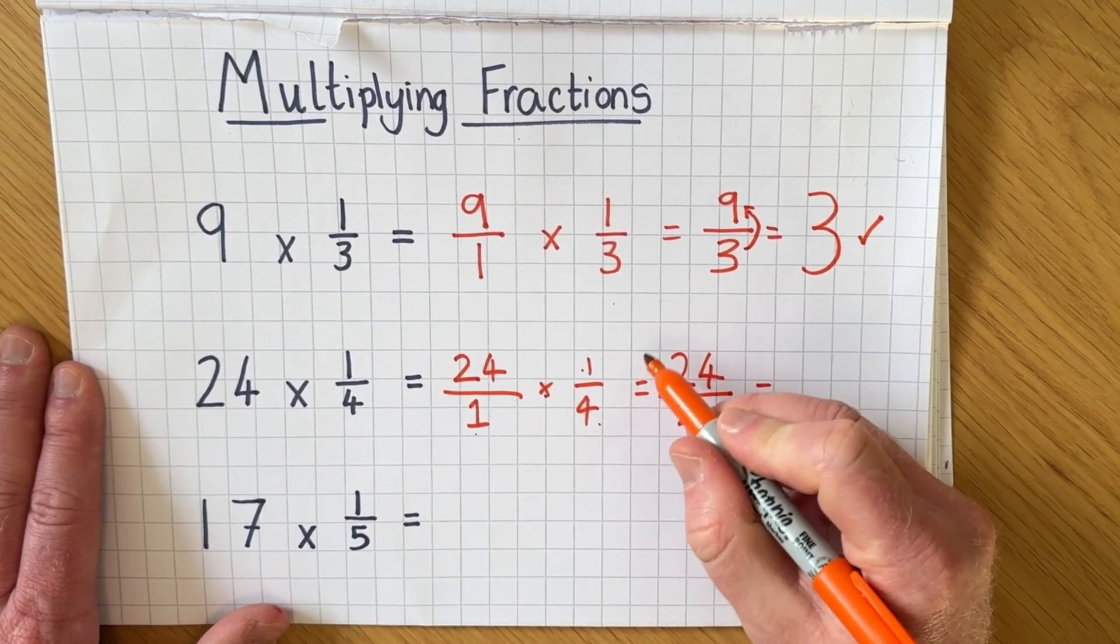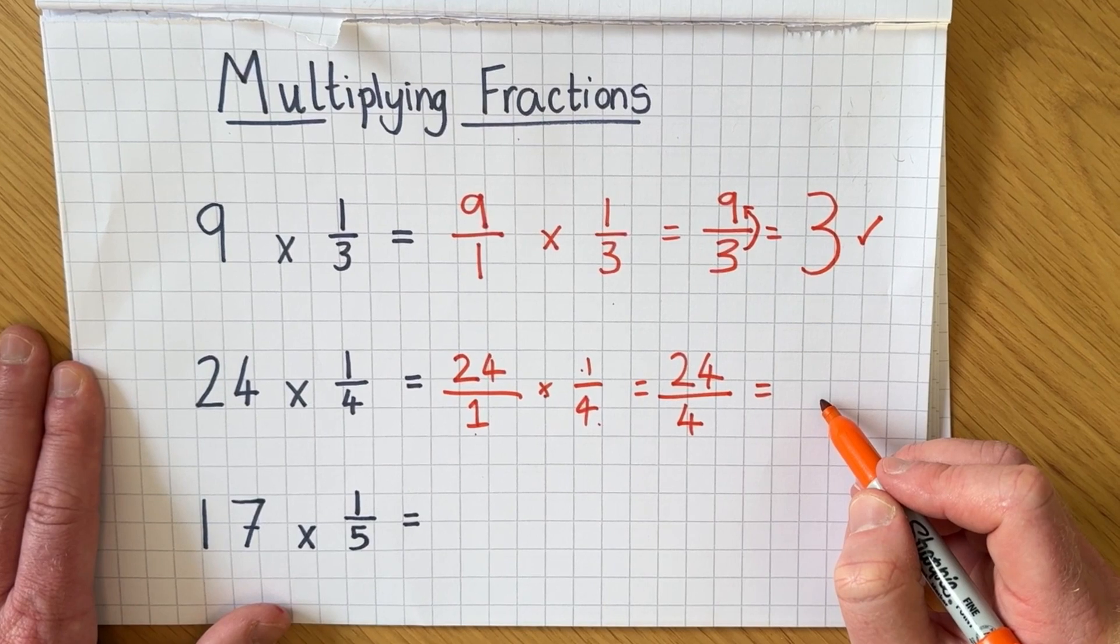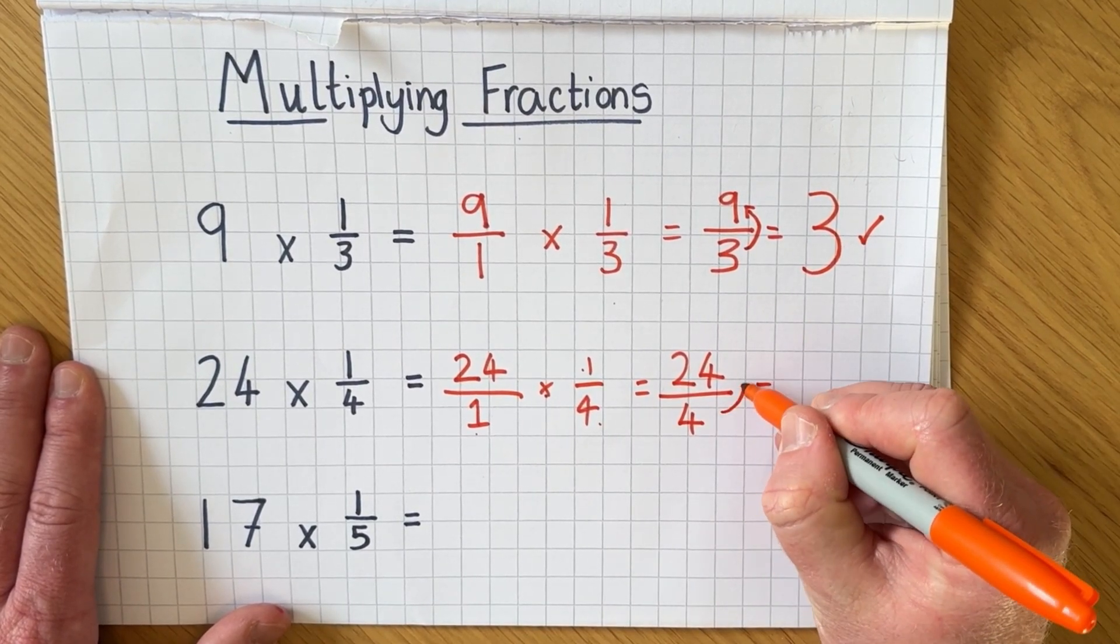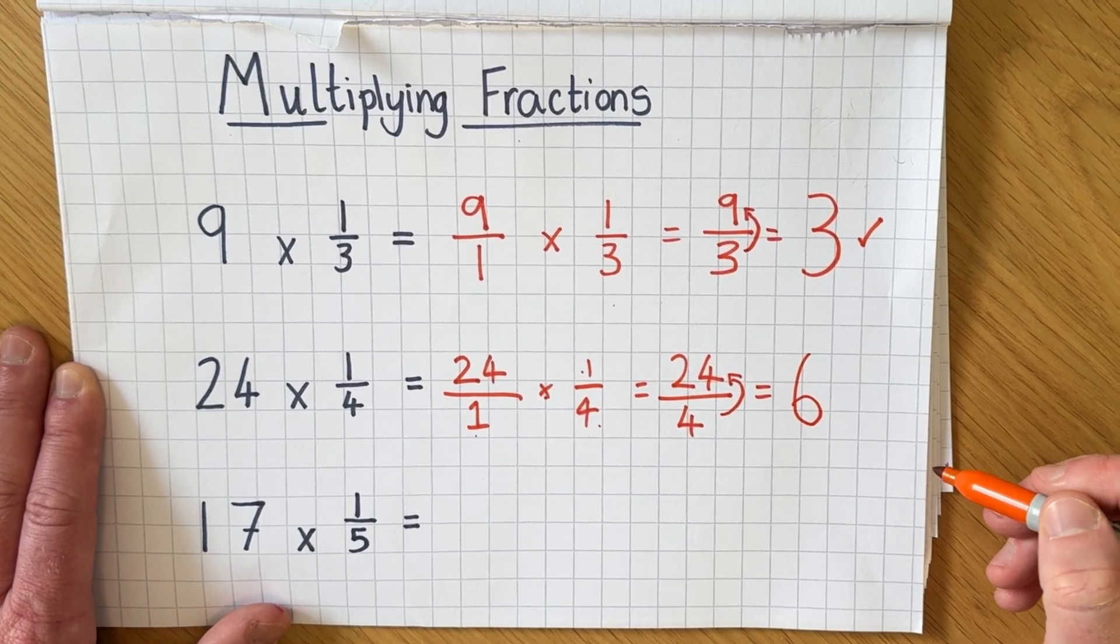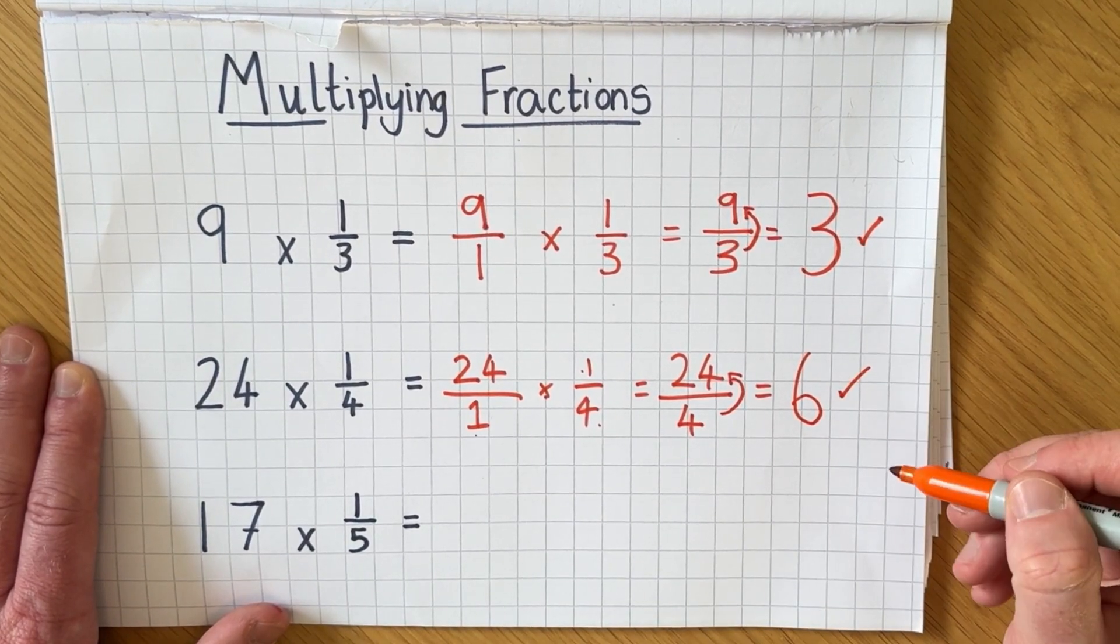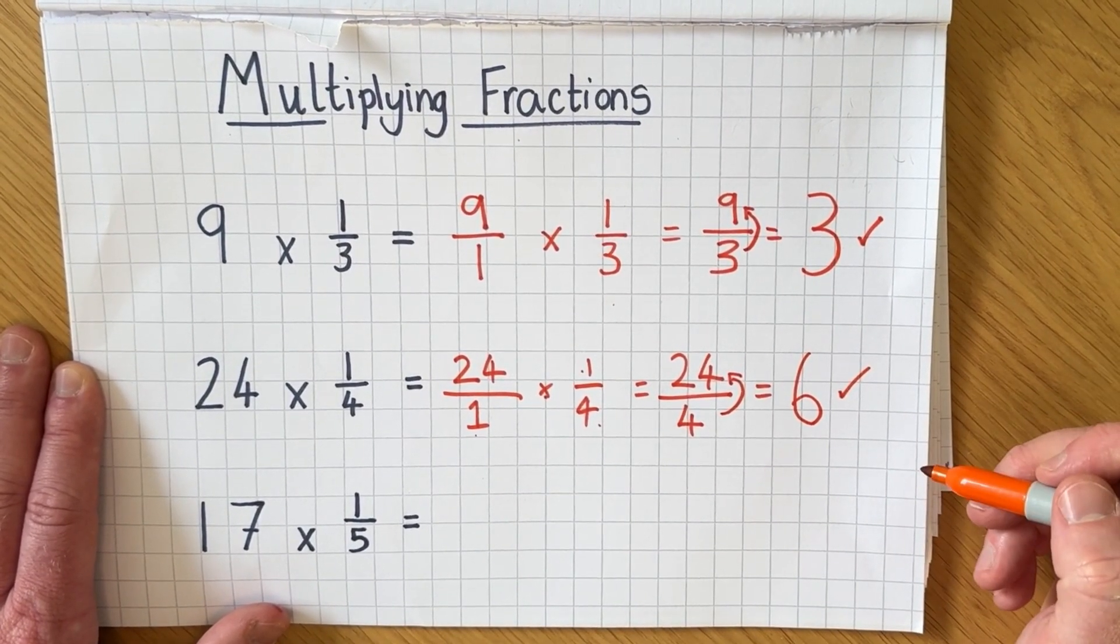So I've got my improper fraction final answer but now I need to work it out as a mixed number. How many fours are in 24? There are six, six whole ones and that's the final answer.